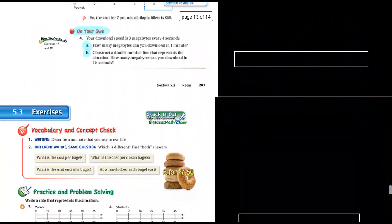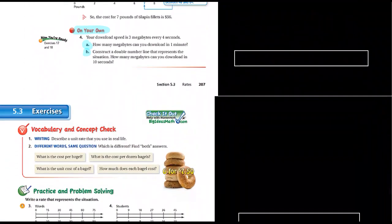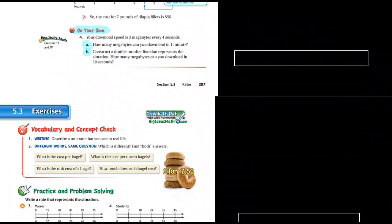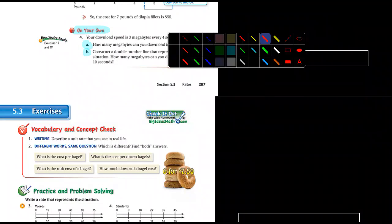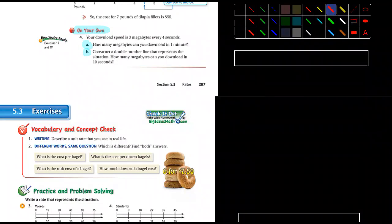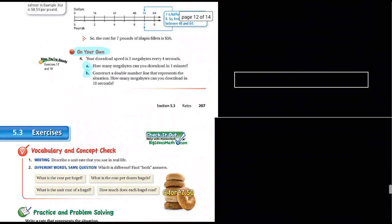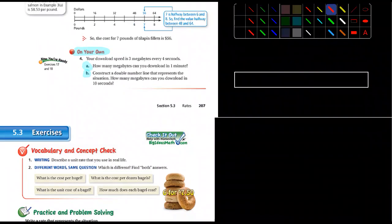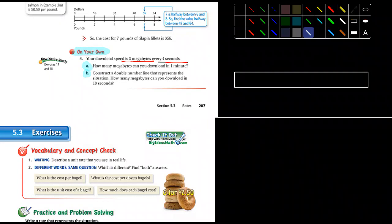Let's go down a little bit further, and I've got two more on your own that I want you to do. This is page 207, and it's A and B that I want you guys to do. Let's look at this for a moment. I'm going to help you guys set this up. So it says number four on your own. Your download speed is three megabytes every four seconds. How many megabytes can you download in one minute?